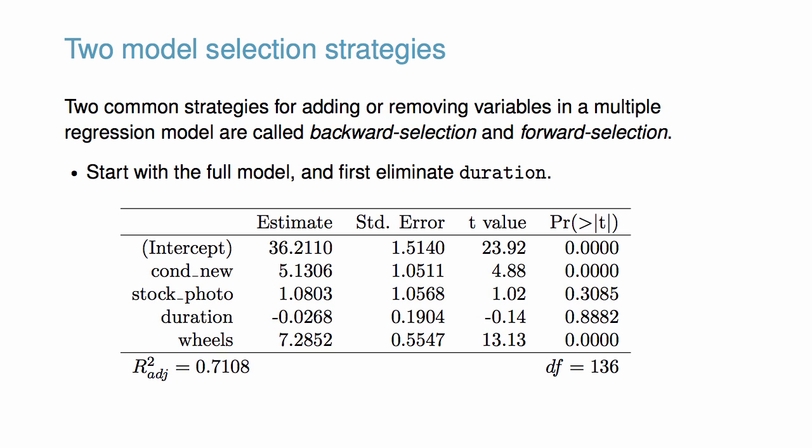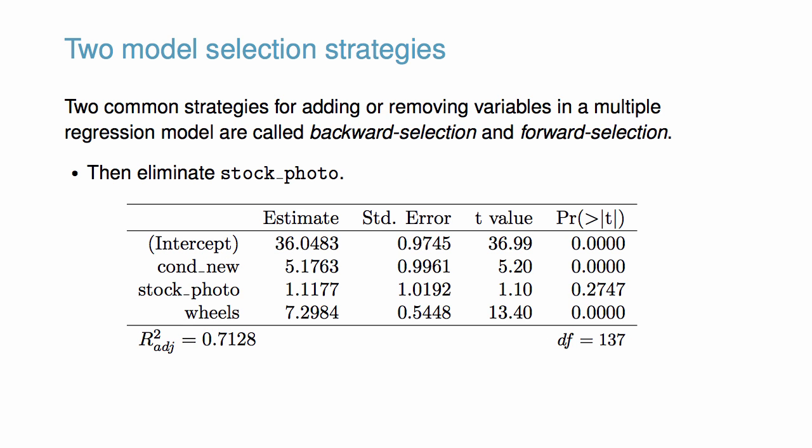Let's apply backward selection to our current example. We start with the full model and eliminate duration since it has the largest p-value. Then, we refit the model, which will give us slightly different p-values for the remaining variables.